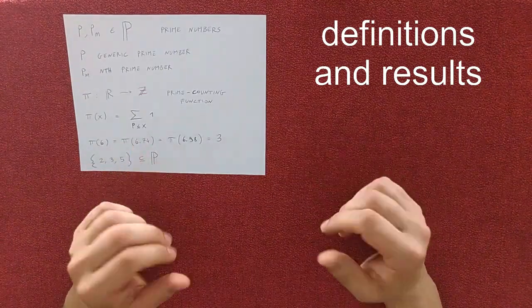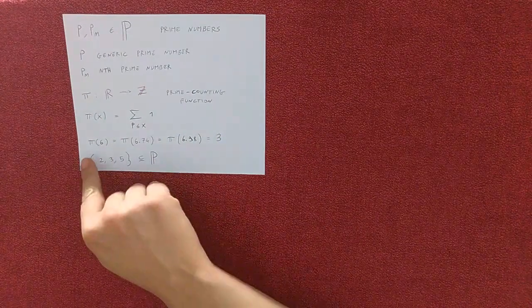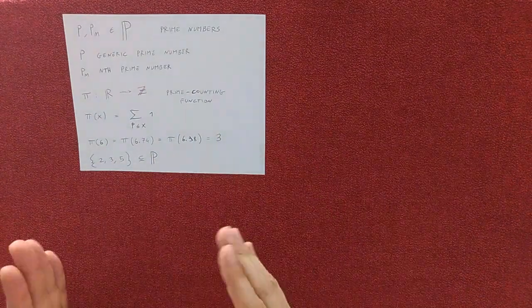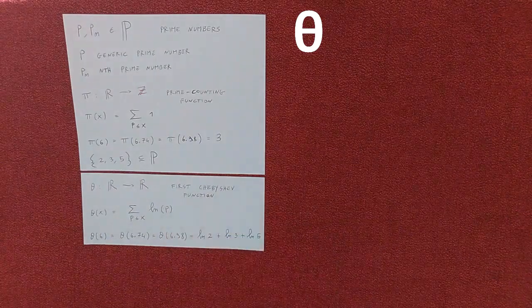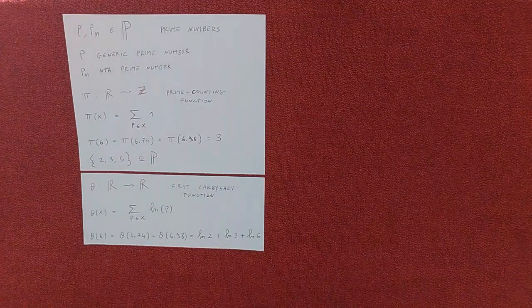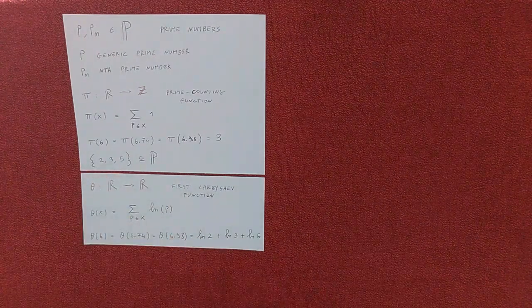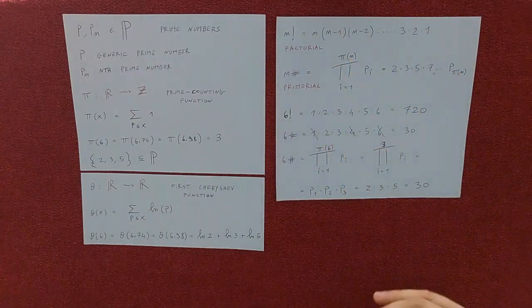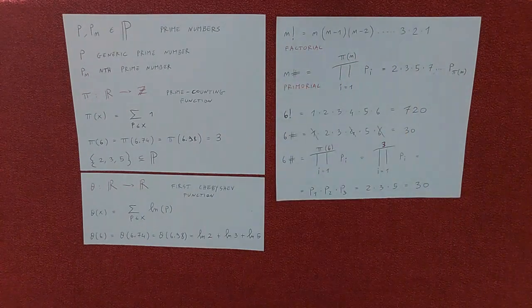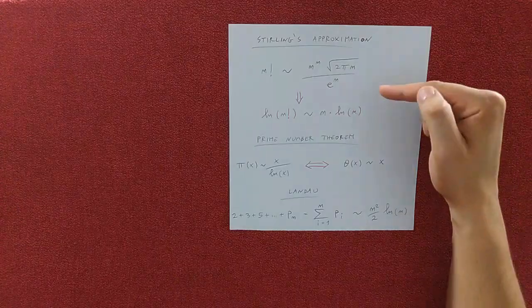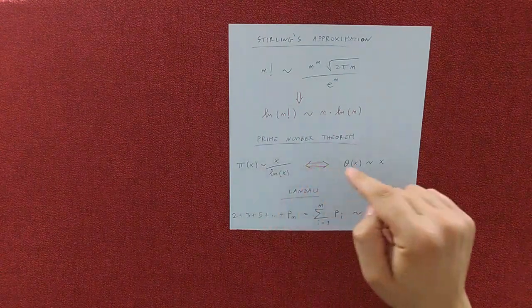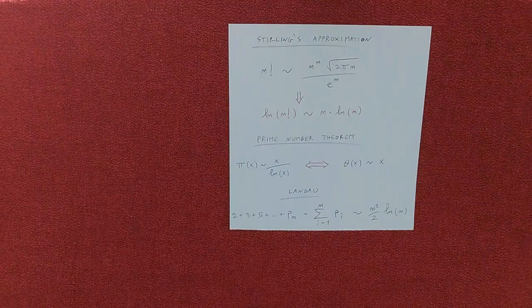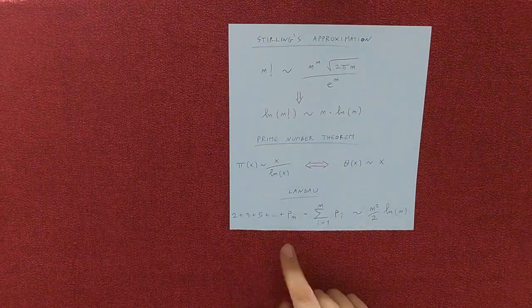First of all, we need some definitions and results. Pi is the prime counting function — for example, pi of 6 is 3 because before 6 there are 3 prime numbers: 2, 3, and 5. Theta is the first Chebyshev function — theta of 6 is the sum of the logarithms of the prime numbers 2, 3, and 5. n-primorial is defined as the product of the prime numbers less than or equal to n — for 6-primorial we consider only the primes 2, 3, and 5. We'll need Stirling's formula and in particular the case involving logarithms, and then the prime number theorem — these two are equivalent. Last but not least, Landau's result for the sum of n prime numbers.